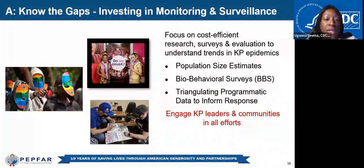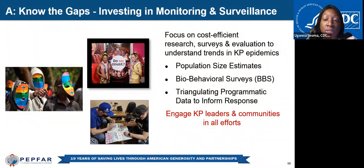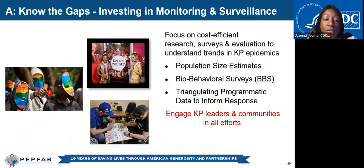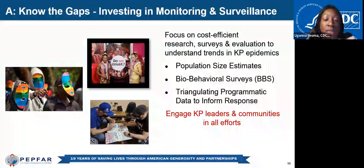To understand our gaps, we need to invest in various cost-effective surveillance strategies. This may include population size estimates, formal bio-behavioral surveillance studies, small area surveys, and triangulating programmatic data to inform the response. It is vital that KP leaders and communities are engaged and involved in the implementation of these strategies.